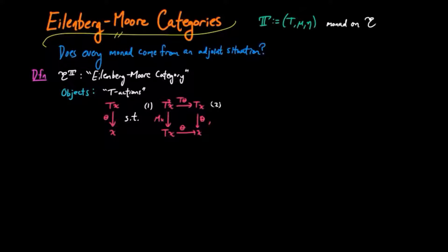The second axiom is that it is invariant under the unit, so that we can take the unit first on x, and then theta, and that will give us the identity.